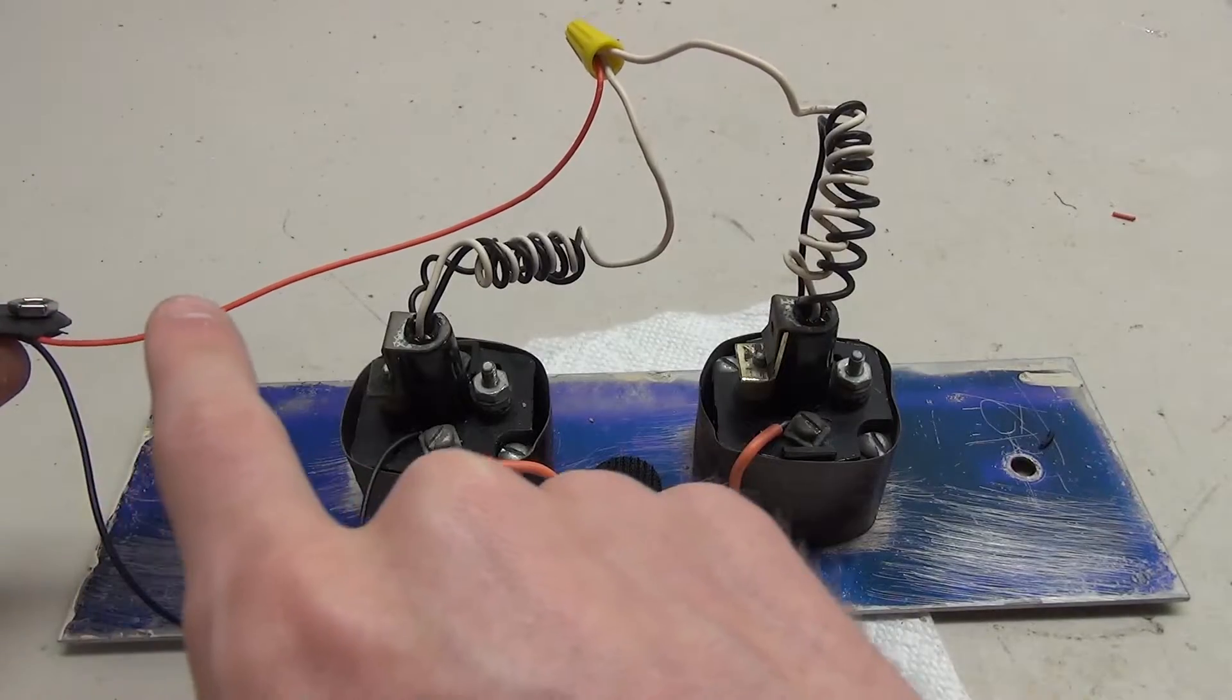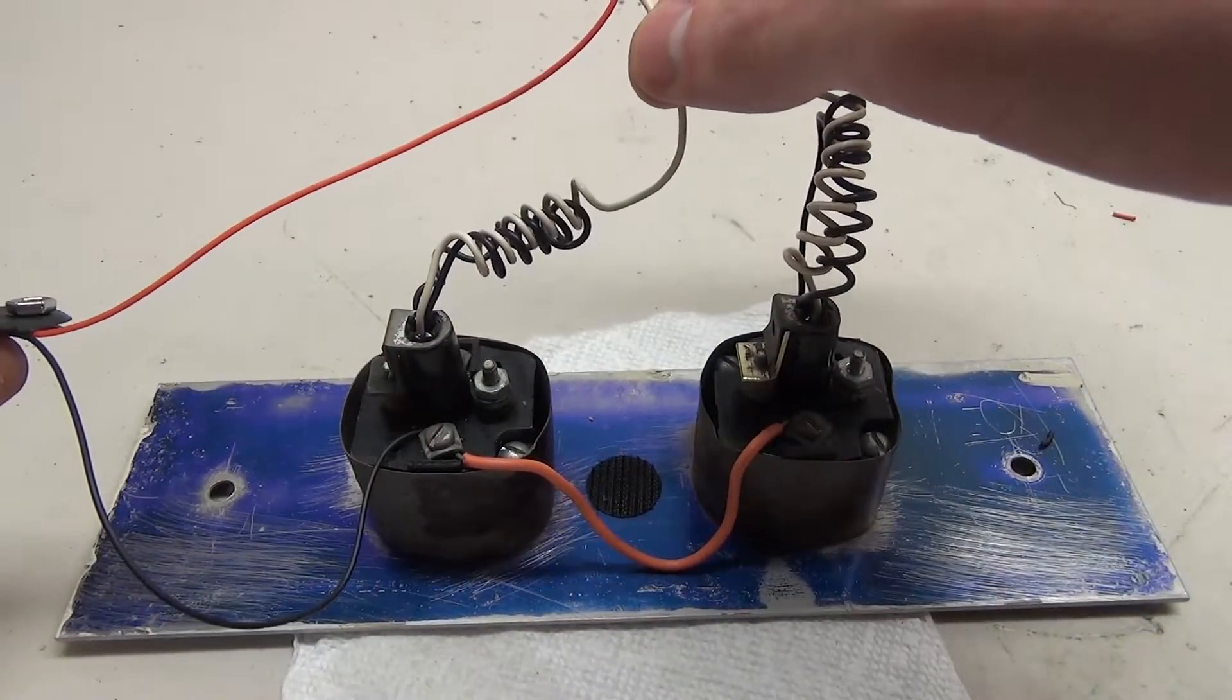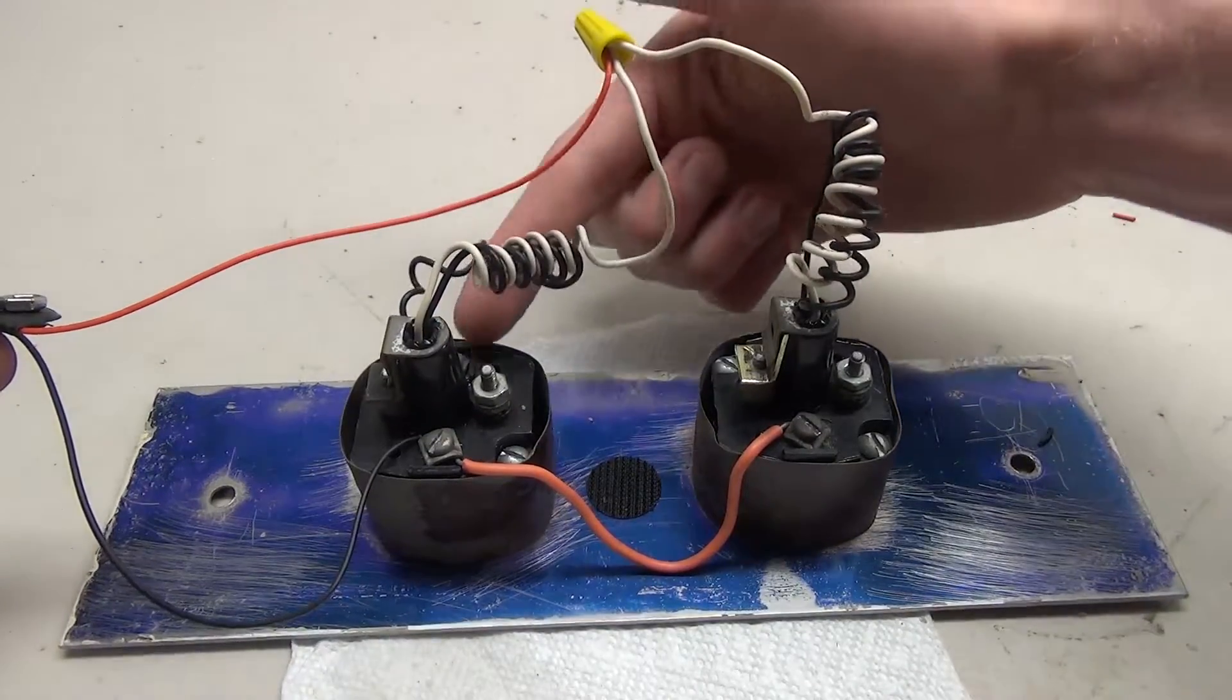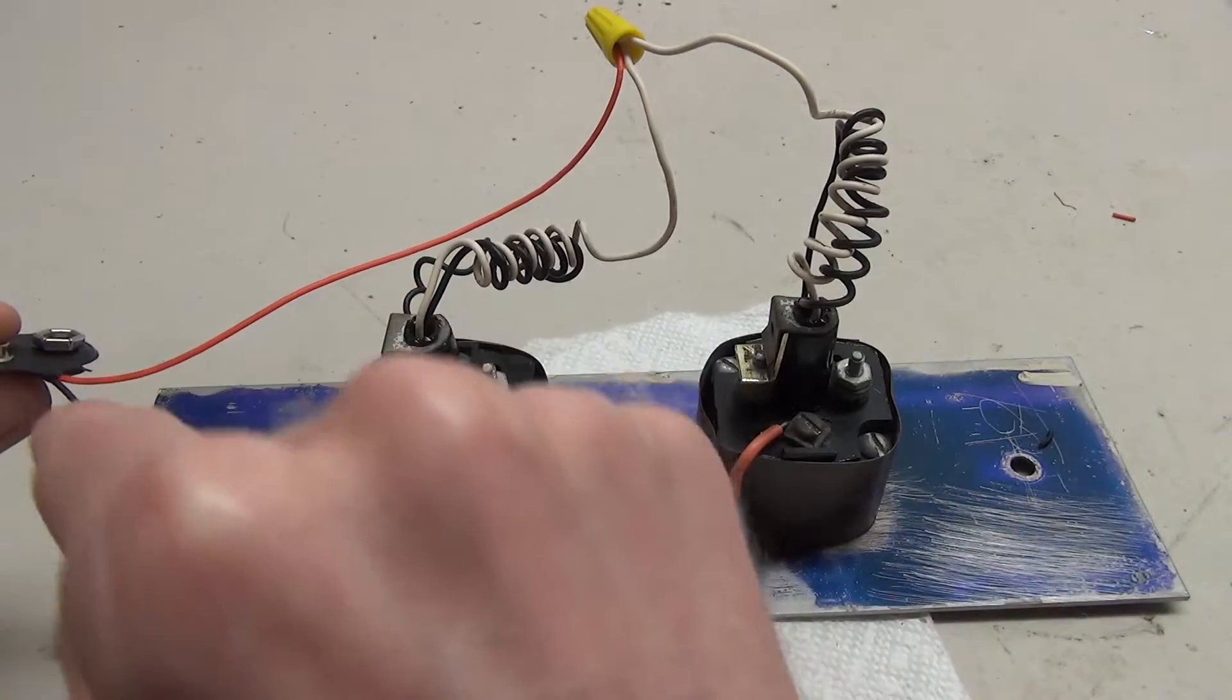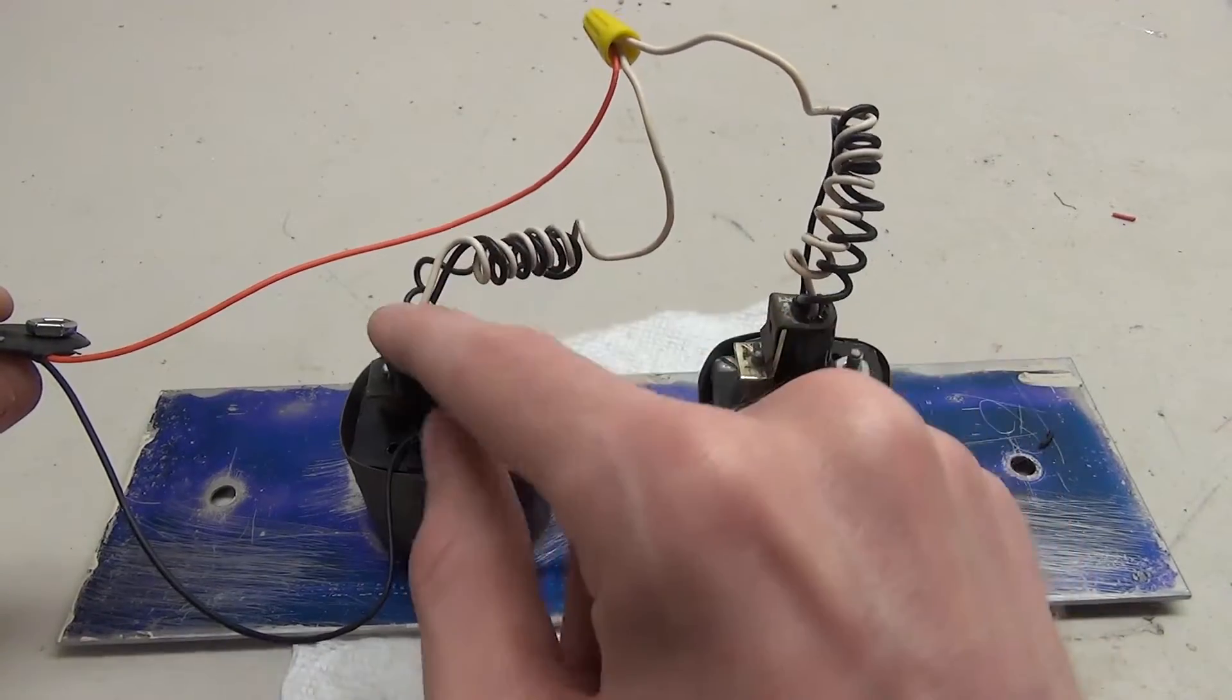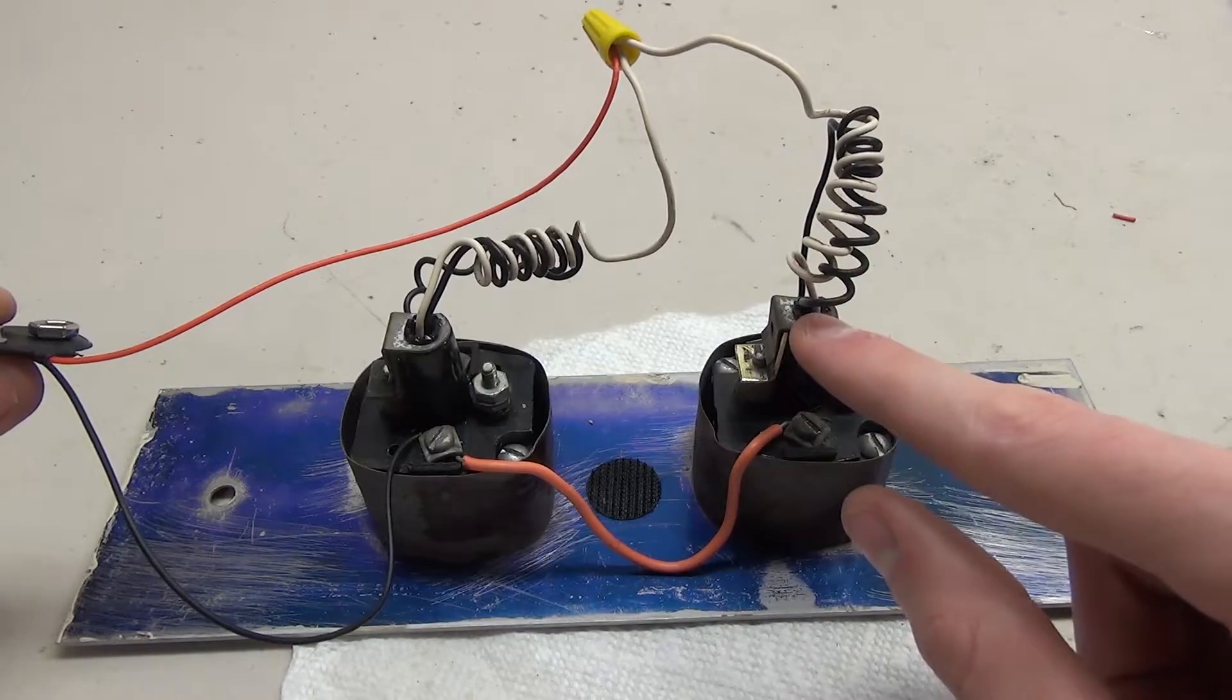Pretty much what we have going on here: we have the positive end of our battery pack connected together to the two positive parts of our lamp sockets. Then from each lamp socket the negative wire goes down to one side of our button. Then the other side of the button completes the whole circuit by connecting the negative end of our battery pack to both sides of this. So when you press this button down it completes this circuit lighting up this light. When you press down this button it completes this circuit lighting up this light.